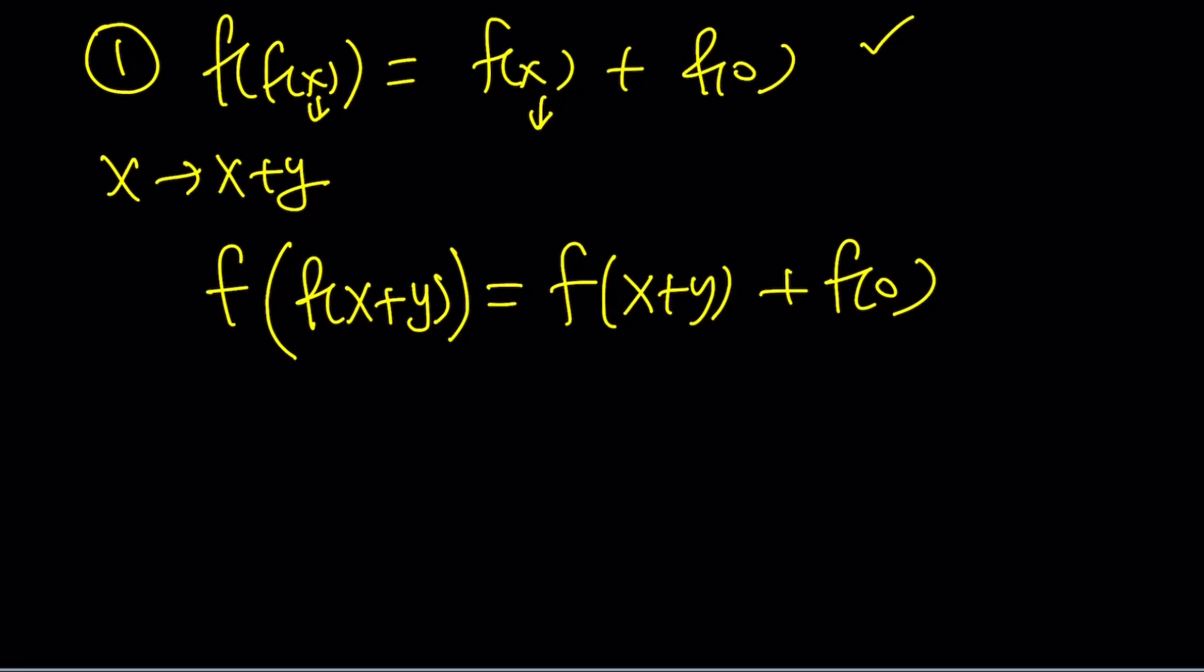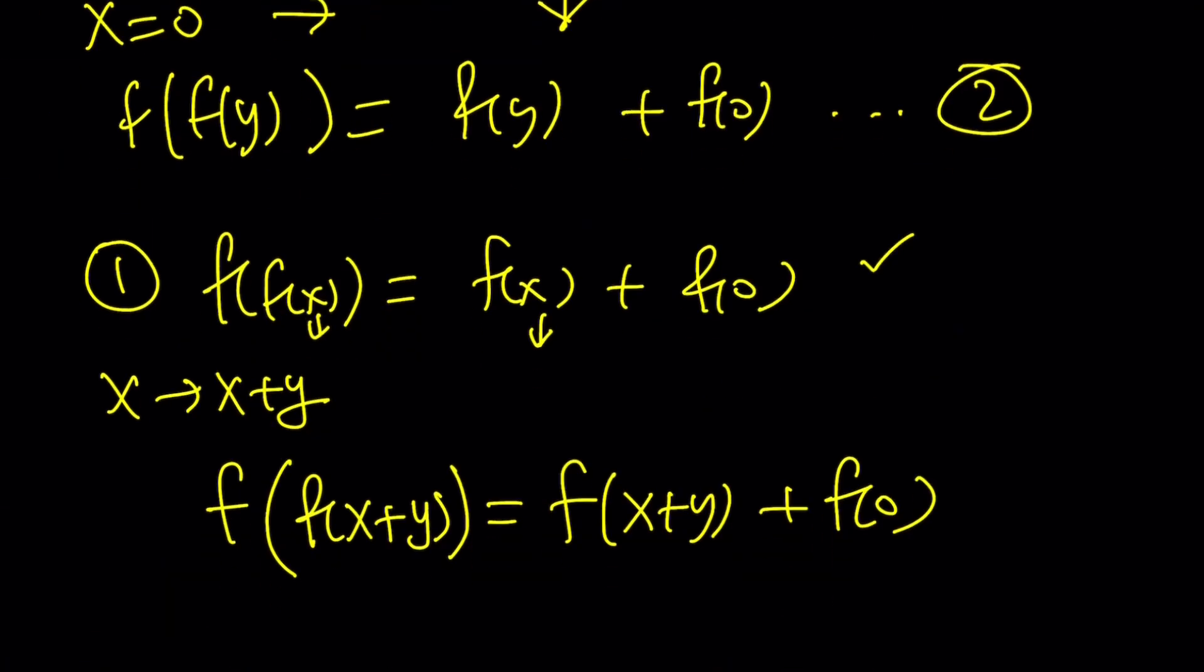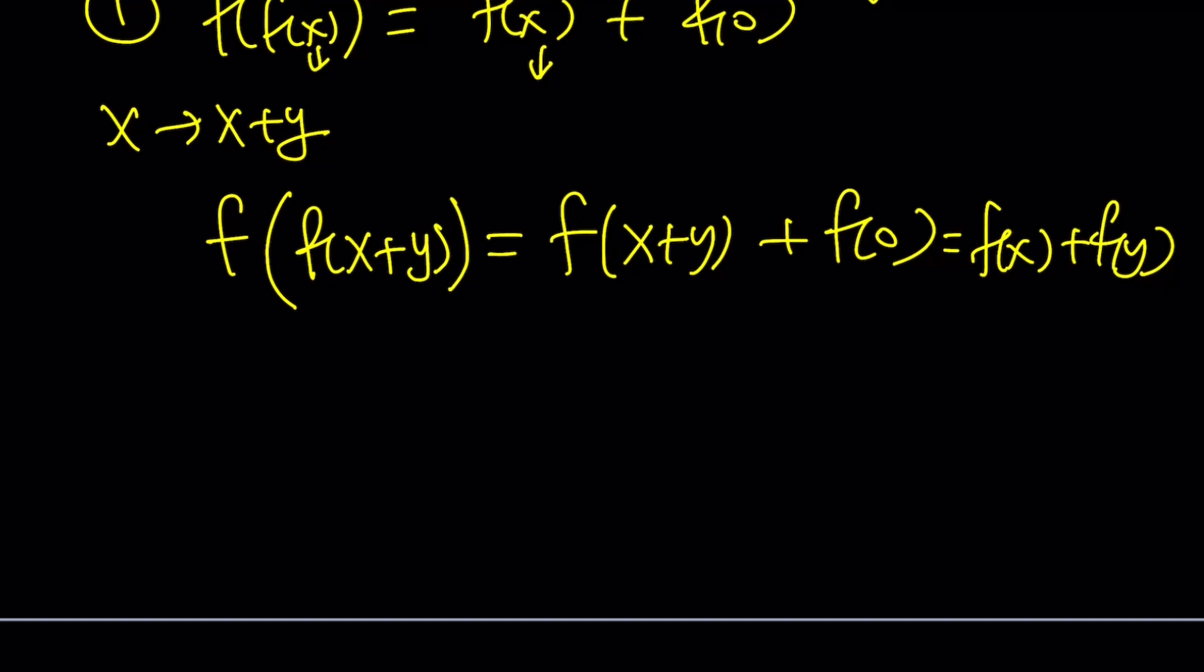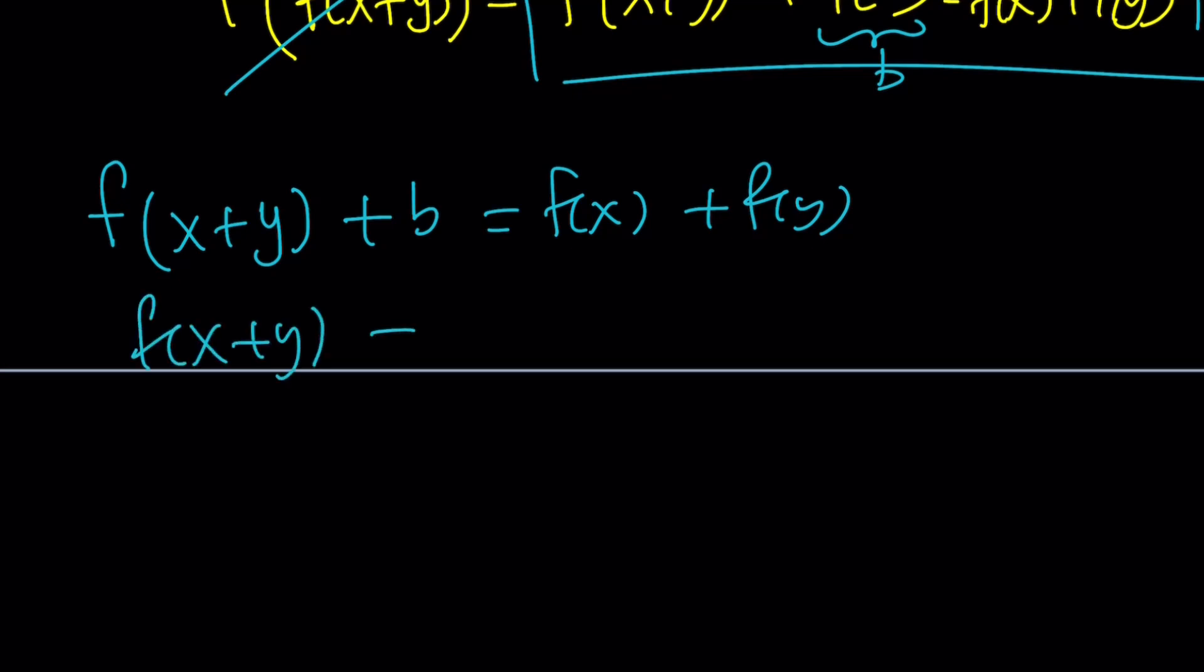Now, what are we getting out of this? We're getting that f(f(x + y)) equals f(x + y) plus f(0). At the same time, we do know that the left-hand side, f(f(x + y)), is equal to this from the original equation. We could also set it equal to f(x) + f(y), which is nice. Because from here, we get a really nice equation. I will replace f(0) with something. I want to use the variable b. You'll see in a little bit why that's the case. I want to replace f(0) with b. Now, what we have here is actually pretty good, because that gives us f(x + y) + b equals f(x) + f(y). I want to isolate f(x + y), so subtract b from both sides. That gives you f(x + y) - b equals f(x) + f(y) - b.